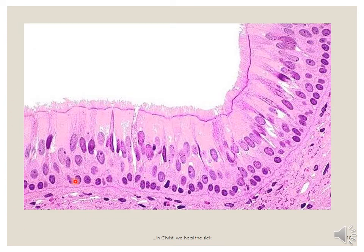This is another slide of the pseudostratified columnar epithelium. As you can see, the basement membrane and then the lumen. This epithelium is found mainly in the respiratory tract, but can also be found in the male reproductive tract. As we go further, we will give in detail the particular areas where we can find the pseudostratified columnar epithelium.